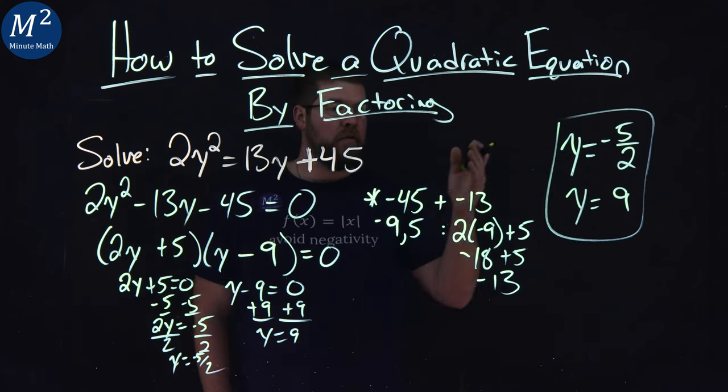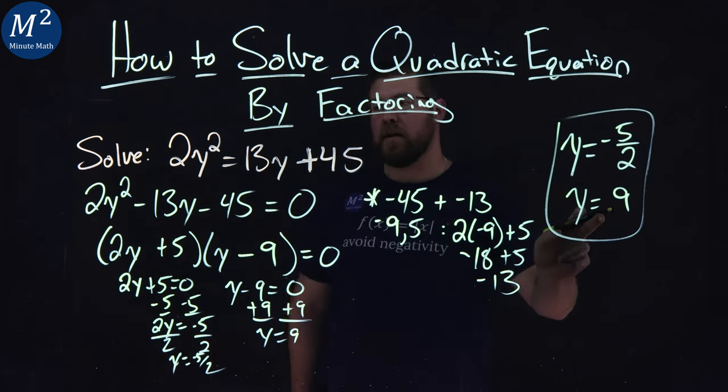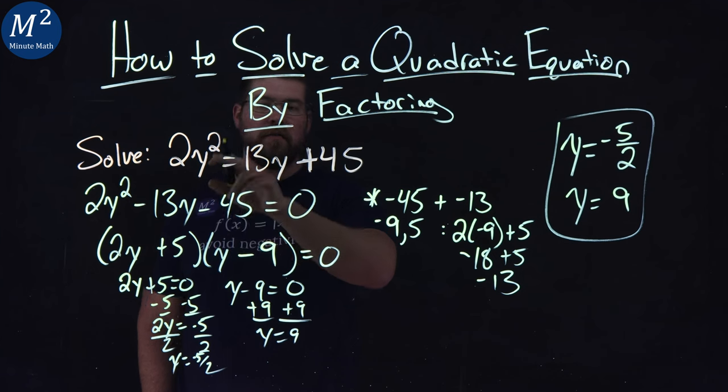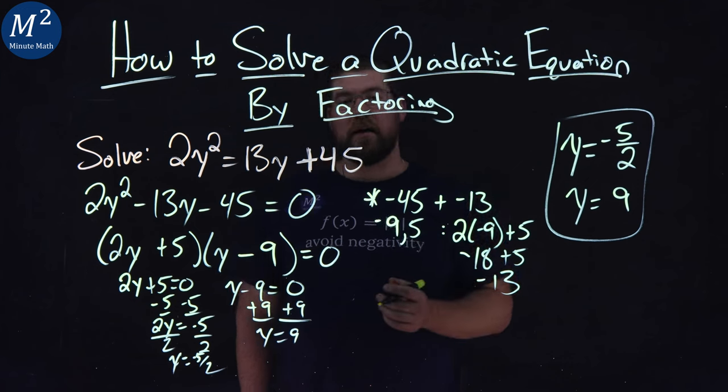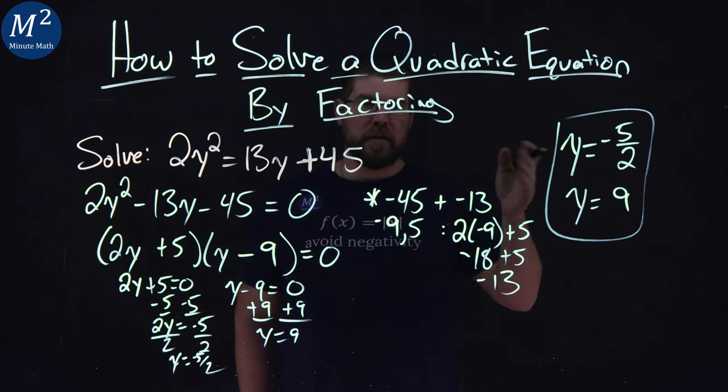And there we have it. We solved it by factoring. I have two solutions that are true to this equation. 2y squared equals 13y plus 45. Two possible solutions are y equals negative 5 halves and y equals 9.